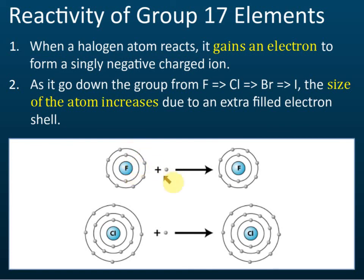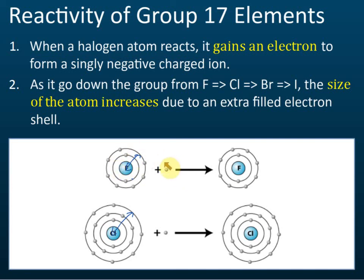Fluorine can attract electrons more easily because its atomic size is very small, so the electrons are very close to the nucleus. The attraction force is strong, so fluorine can receive electrons easily. The radius of fluorine is much smaller than the radius of chlorine, so fluorine attracts electrons more easily.